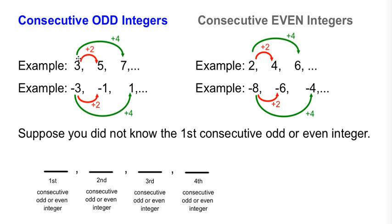In order to go from the first consecutive odd integer to the third consecutive odd integer, you'll notice that that is an increase of 4. 3, the first consecutive integer, plus 4 will give you 7. Same thing with your bottom example here.